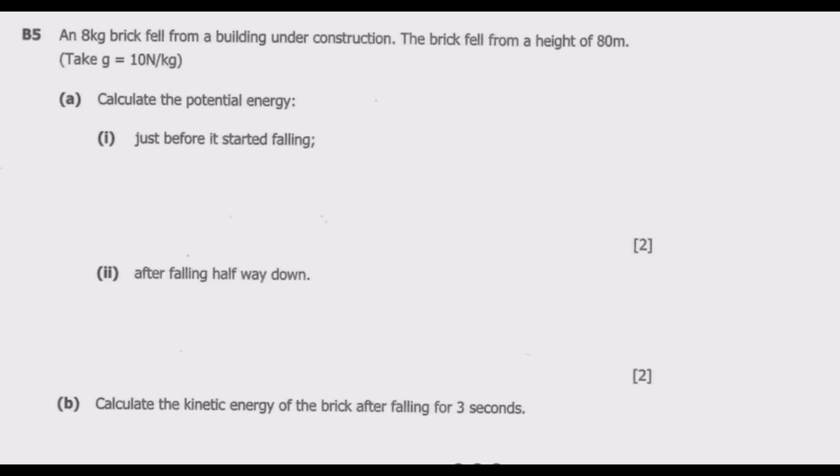Just before it started falling, the potential energy is at maximum with zero kinetic energy. PE equals mass times gravity times height. Mass is 8 kg, height is 80 meters, so we have 8 multiplied by 10 multiplied by 80 meters, which gives us 6,400 joules as the potential energy.